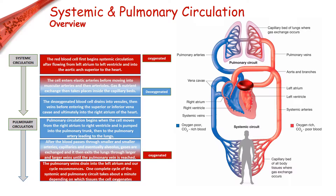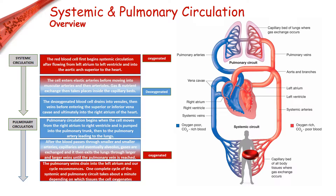The red blood cell first begins systemic circulation after flowing from the left atrium to the left ventricle and into the aortic arch superior to the heart. The cell enters elastic arteries before moving into muscular arteries and then arterioles. Gas and nutrient exchange then takes place inside the capillary beds. The deoxygenated blood drains into venules, then veins, before entering the superior or inferior vena cavae and ultimately into the right atrium of the heart.